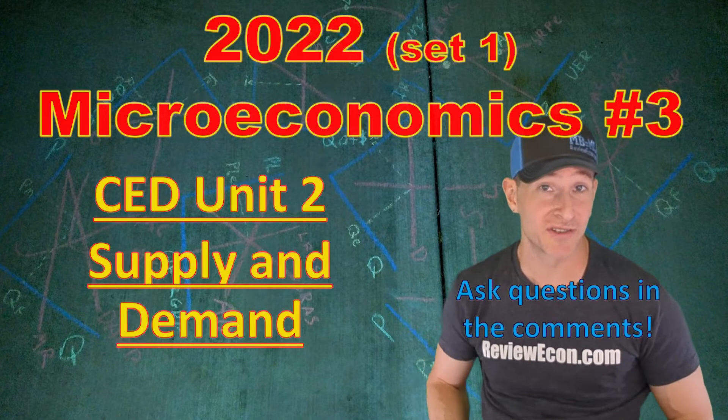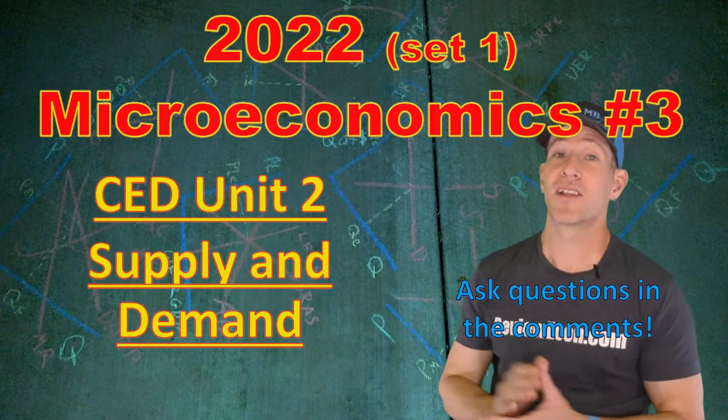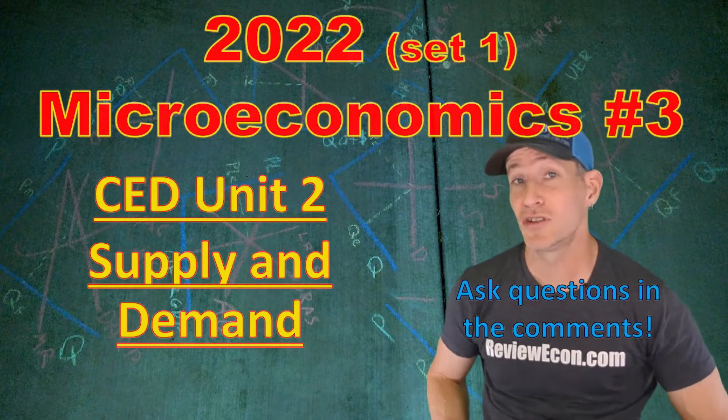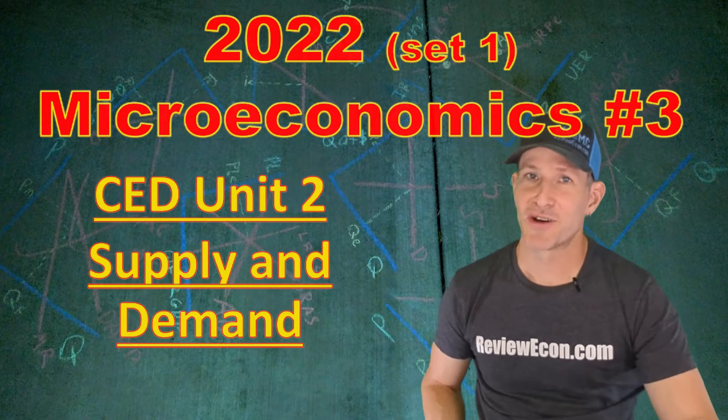Today we're going to be looking at 2022's FRQ number three from set one. In order to do well on this question, you need to have gotten through unit two for microeconomics. This one's all about supply and demand. Let's go ahead and get into it.